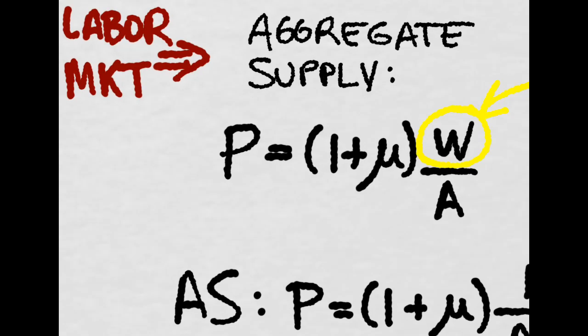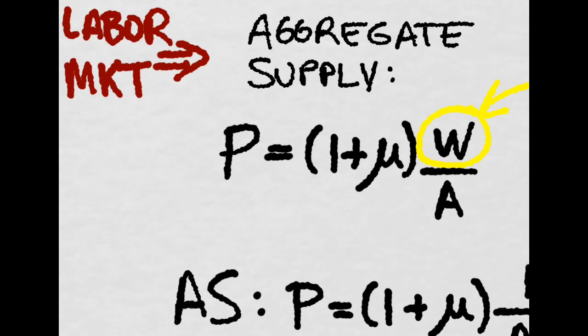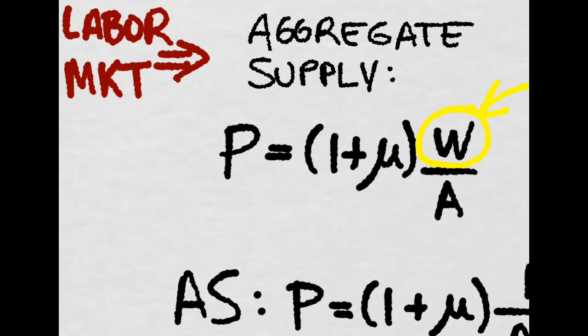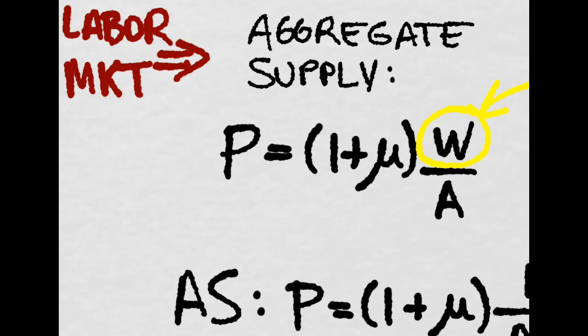So now we're going to see the aggregate supply. We create the aggregate supply based on the wage setting and price setting relationships.